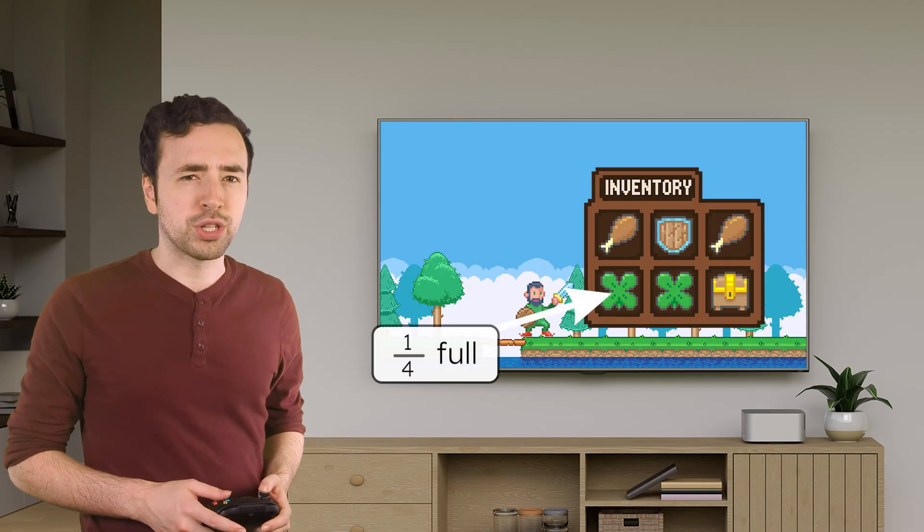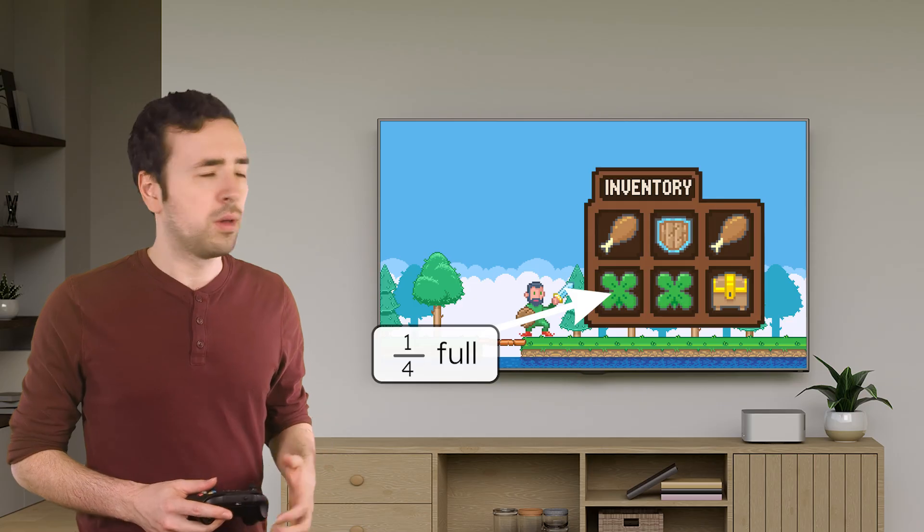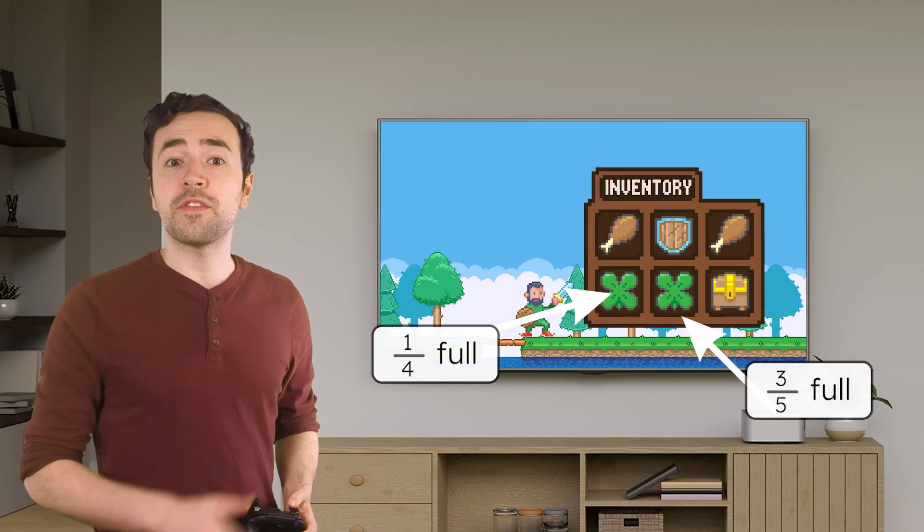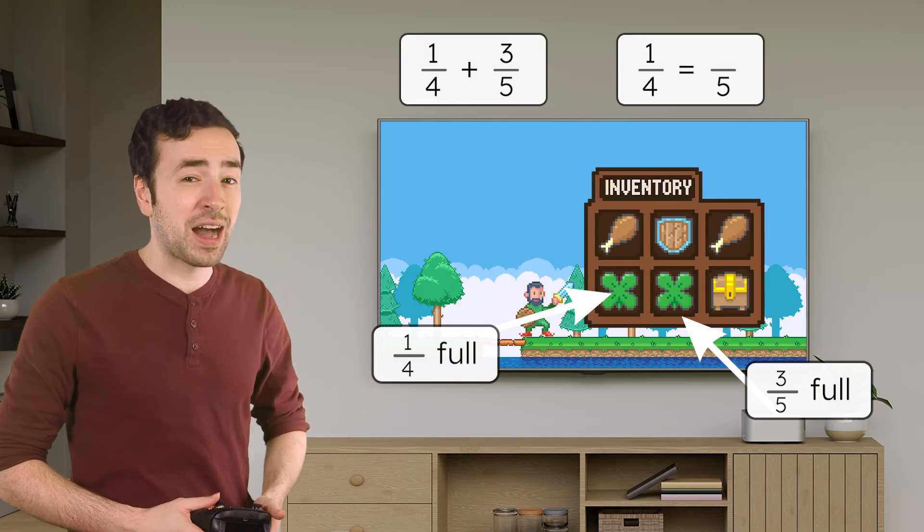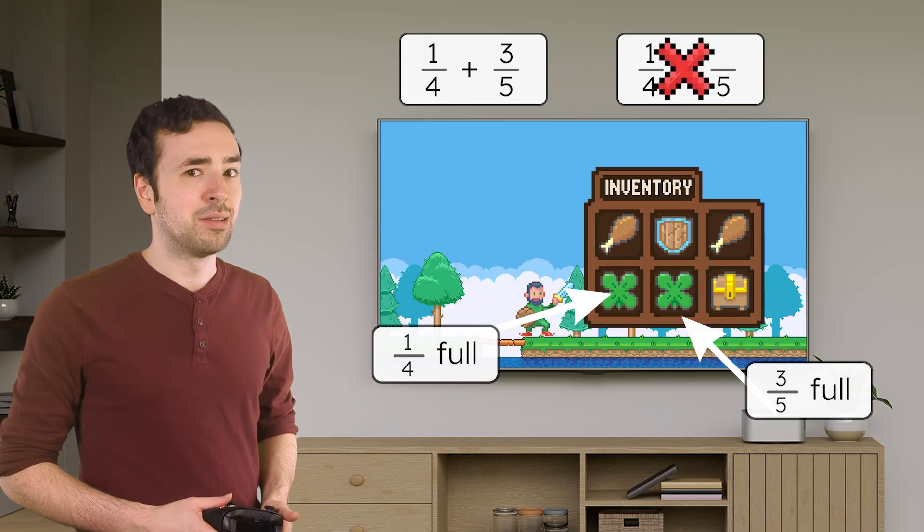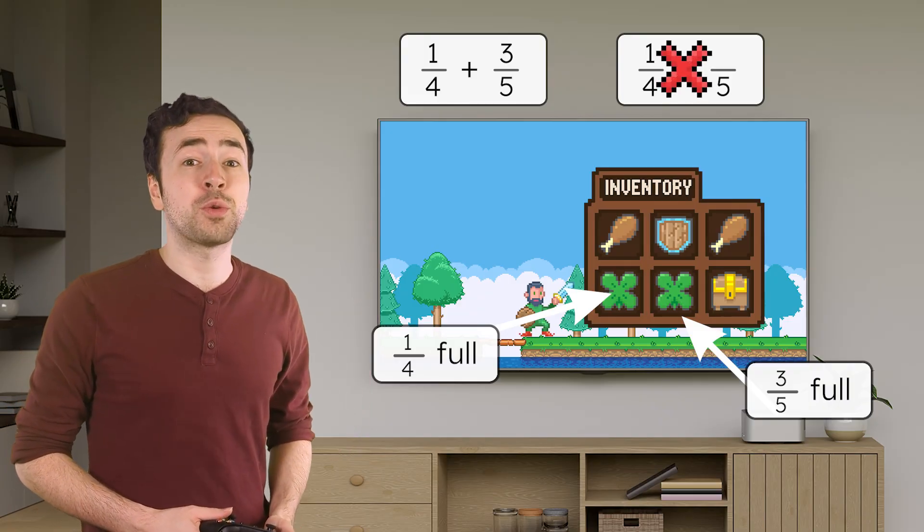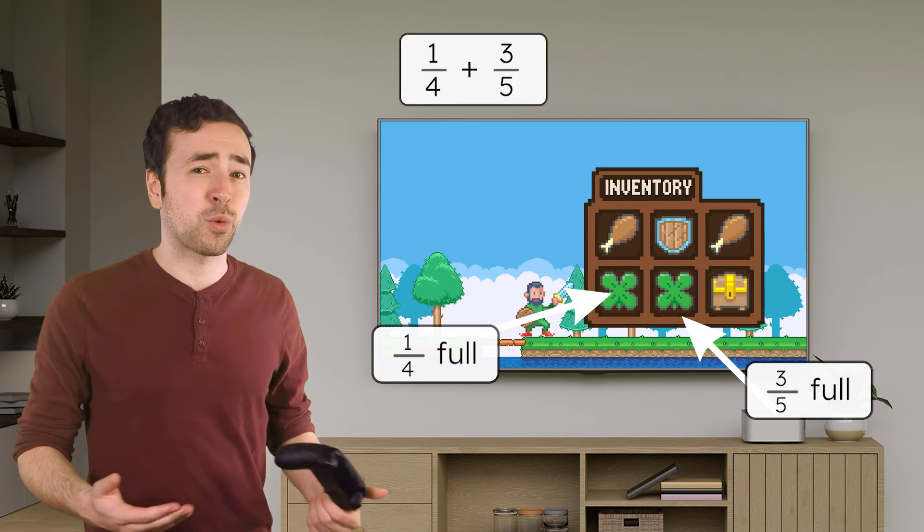This luck potion is one-fourth full, and this one is three-fifths full. Is there a way to represent one-fourth with a denominator of five? Nope. We'll have to figure out a way to rewrite both fractions before we can combine them.